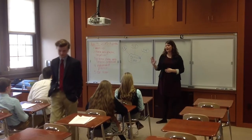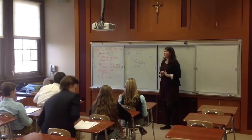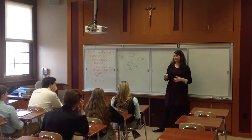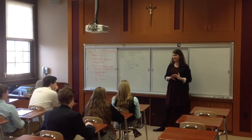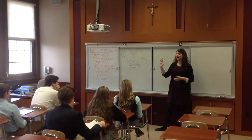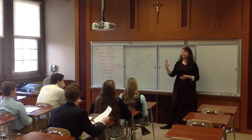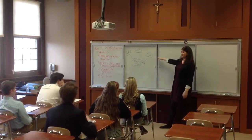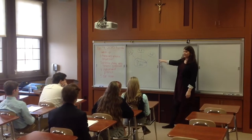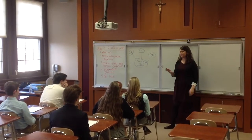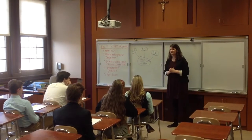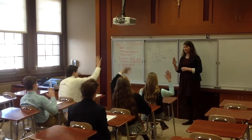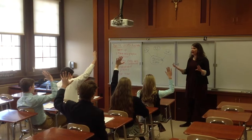Now using our Fist of Five check for understanding, I would like you to tell me on the count of three how well you understand this. Remember, a five means you understand it well enough to explain to a buddy. A one means you have no idea what this is — we've never used it before. And varying numbers in between correspond to those levels. One, two, three. We have all fives.